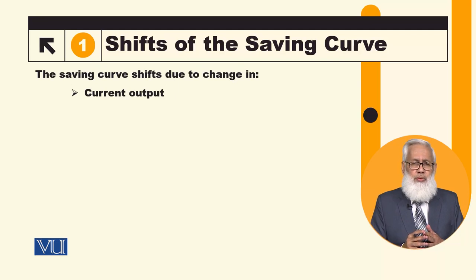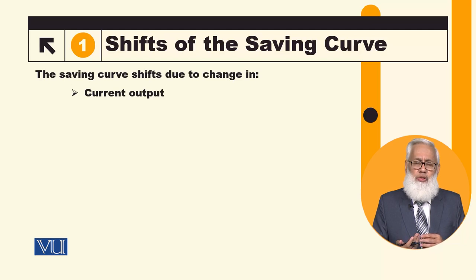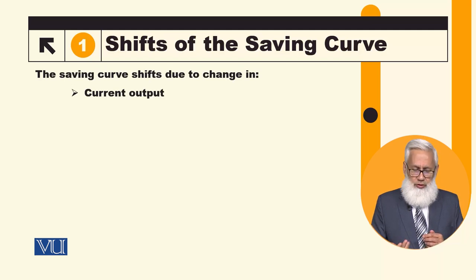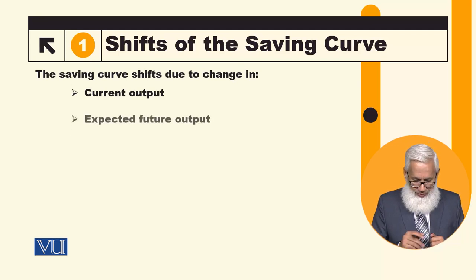If current output increases, the saving curve will shift rightward — the saving curve will increase.